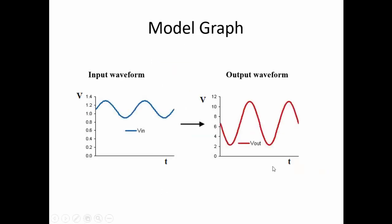This is the model graph showing the input and output waveforms. The input waveform is a small signal and the output waveform is the amplified version of the input signal.